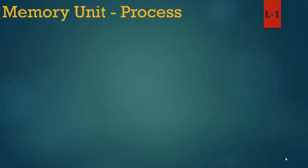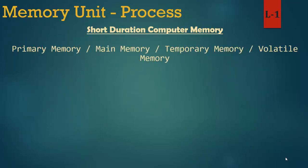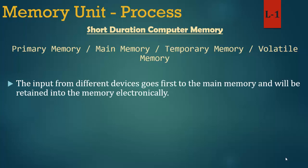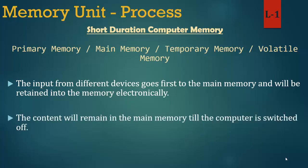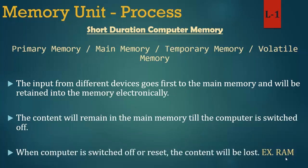Short duration computer memory is known as primary memory, main memory, temporary memory or volatile memory. The input from different devices goes first to the main memory and will be retained electronically. The content will remain in the main memory until the computer is switched off. When the computer is switched off or reset, the content will be lost. Example: RAM. Laghu avadhi computer memory ko prathamik memory, mukhy memory, asthayi memory ya asthir memory ke roop mein jaana jata hai. Udaaharan: RAM.